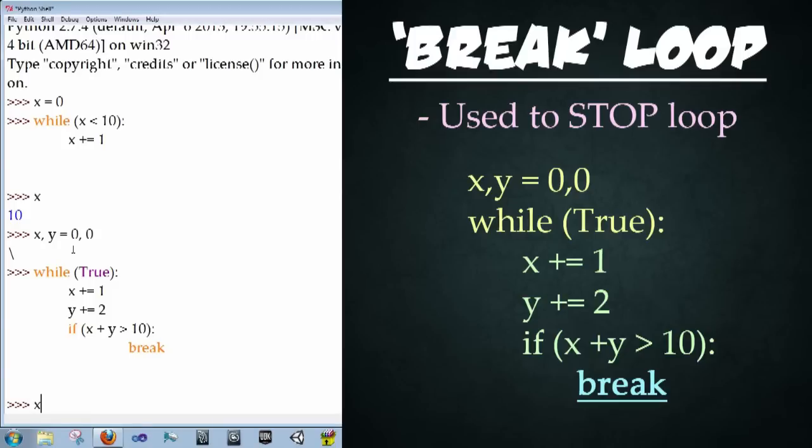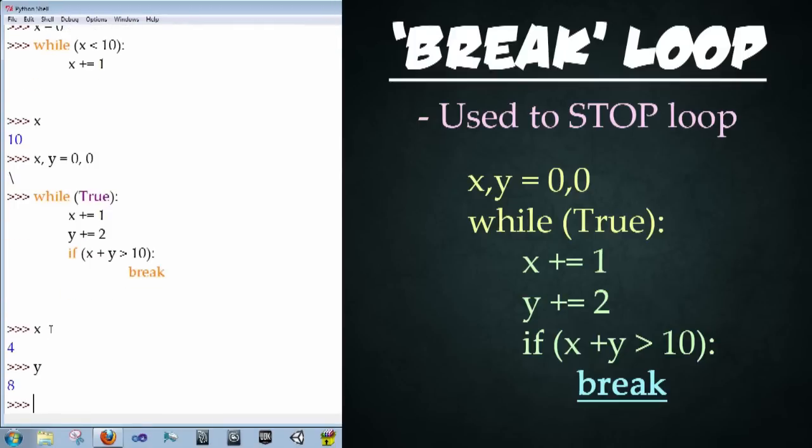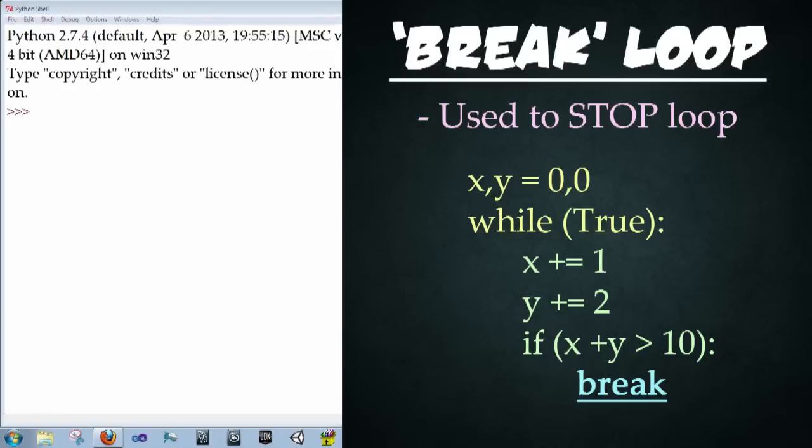Now if we type x, we can see the value is four. Y, the x and y values combined to a value of 12 ended up meeting the condition that caused the loop to break. Great job so far.